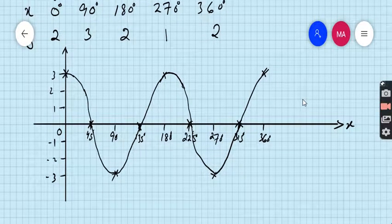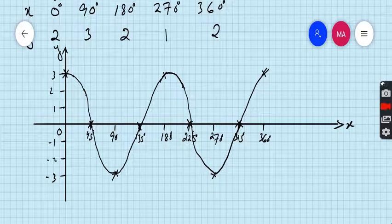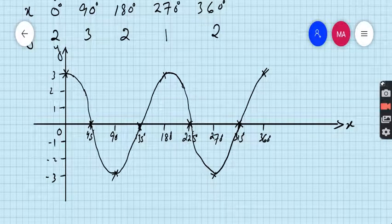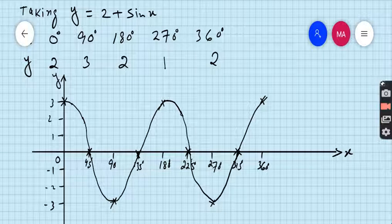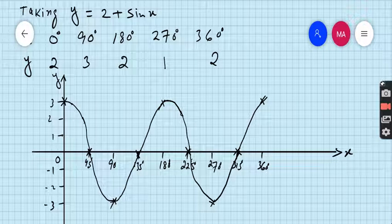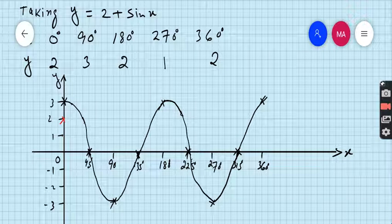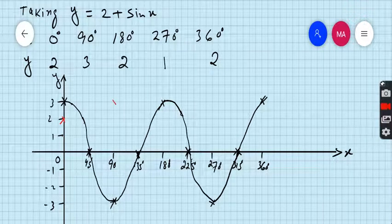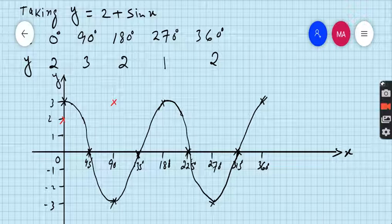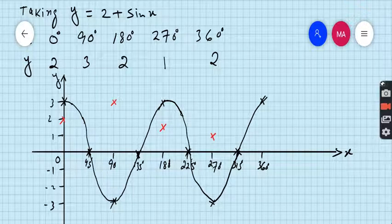Now I will use another colored pencil in order to draw the curve of y equals 2 plus sinx. So when x is 0 then y is 2. First square. When x is 90 then y is 3. Second, when x is 180 then y is 2. When x is 270 then y is 1. When x is 360 then y is 2.